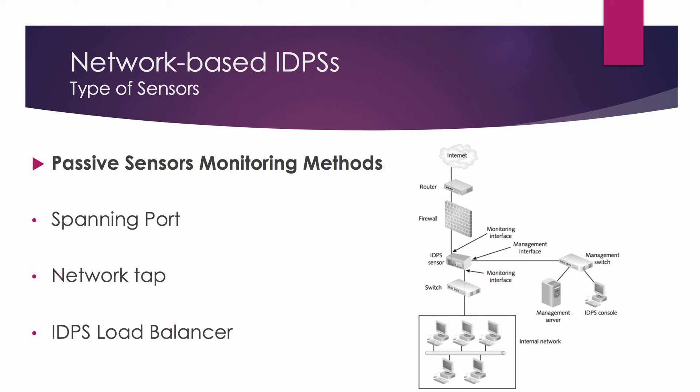Passive sensors can monitor traffic through various methods. Spanning port is one of those methods. Many switches have a spanning port, which is a port that can see all network traffic going through the switch. Connecting a sensor to a spanning port can allow it to monitor traffic going to and from many hosts. Although this monitoring method is relatively easy and inexpensive, it can also be problematic — if a switch is configured or reconfigured incorrectly, the spanning port may not be able to see all the traffic.